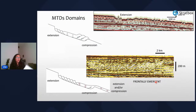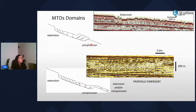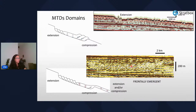MTDs have an extensional domain and a compressional domain. In the extensional domain we can expect rotated blocks and faults; in the compressional domain, folding and thrusting. In frontally emergent MTDs, the mass transport deposit hits a ramp and produces thrust folds at the front.